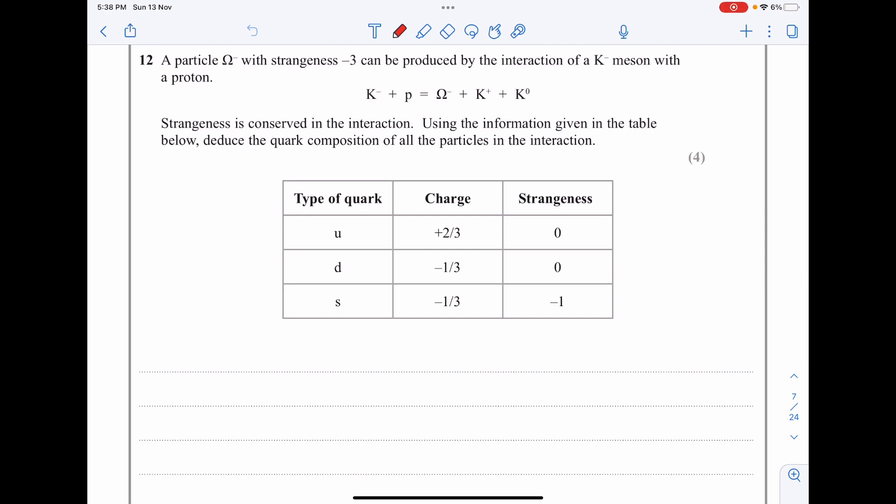Using the information given in the table below, deduce the quark composition of all particles in the interaction. We have three types of quarks, but I'm advising my student to write the three anti-quarks: anti-up which is -2/3, anti-down +1/3, and anti-strange +1/3.